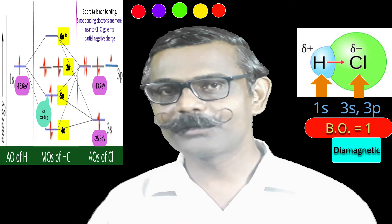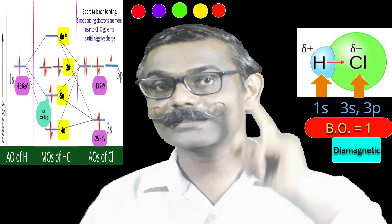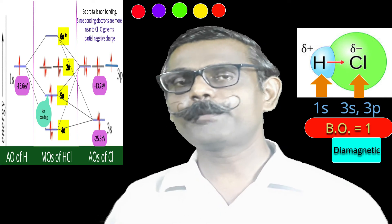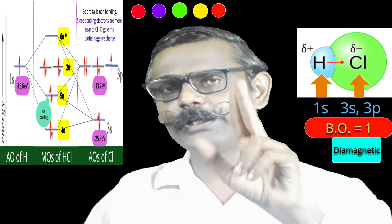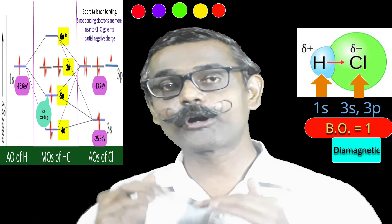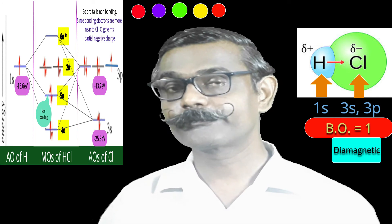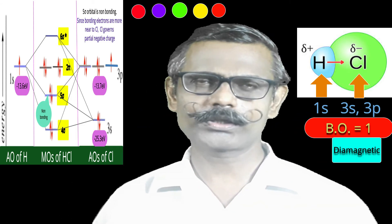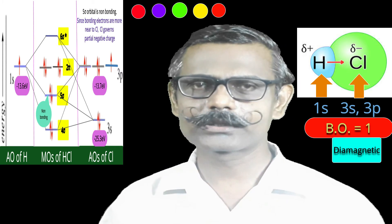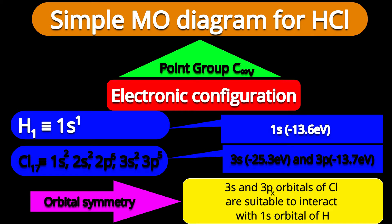The electronic configuration for HCl in molecular orbital terms is: 1σ², 2σ², 3σ², 1π⁴, 4σ², 5σ², 2π⁴, and 6σ*⁰. The bond order equals the number of bonding electrons minus antibonding electrons divided by 2. Only 2 electrons are in bonding orbitals and zero in antibonding, giving a bond order of 1. The molecule is diamagnetic because no unpaired electrons exist. Let us now understand the MO formation of HCl more systematically.